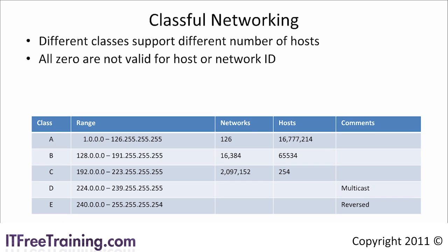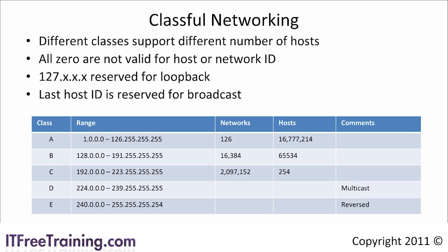The network and host ID cannot be all zeros. The 127 network is reserved for loopback. If you ping any address in the 127 network, you are pinging your local computer, which is useful for testing. The last host ID, or a host ID with all ones, is reserved for broadcast. The next class is class B, which has 16,384 networks and 65,534 hosts per network.